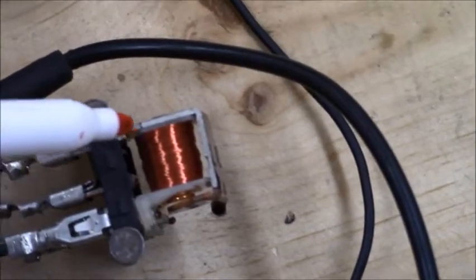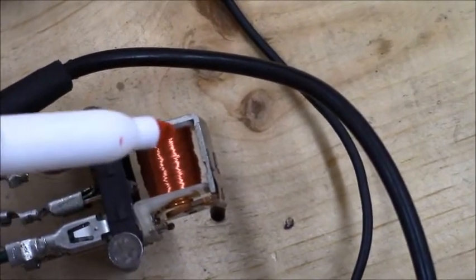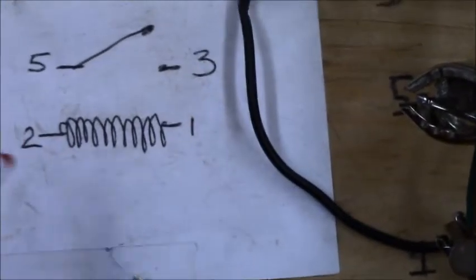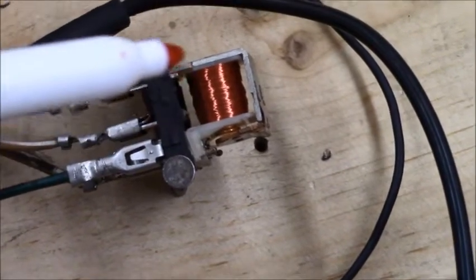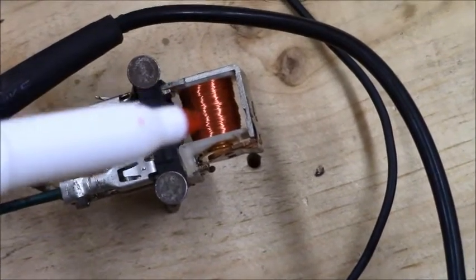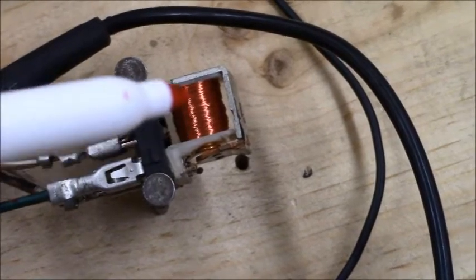So right here we have the coil of wire, and on paper, the coil of wire looks like this right here. But when we look at a relay, you actually see the coil of wire is quite a bit of coils. It's really long.